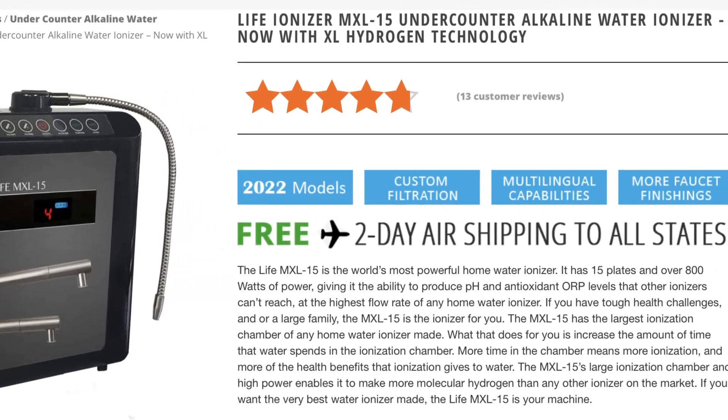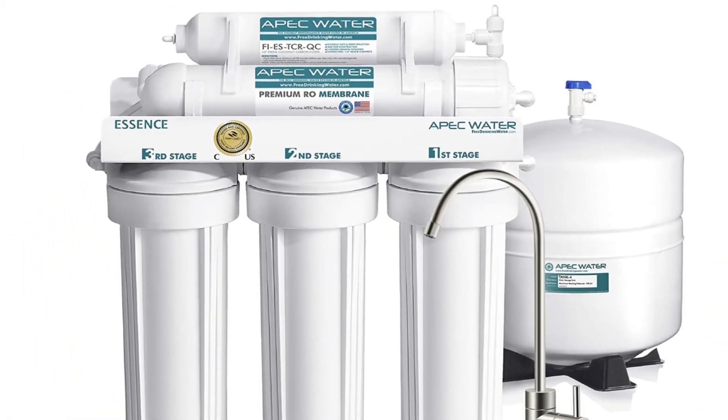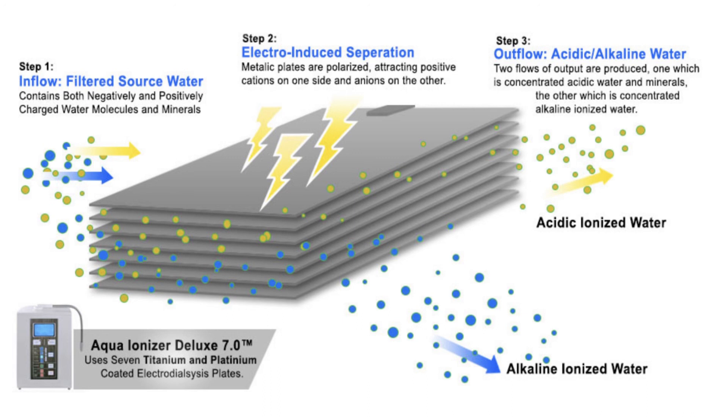The next step up from a simple RO filter would be to get a comprehensive water purification unit. These units will cleanse your water throughout multiple stages — first starting with a stage similar to an RO filter, then moving on to a UV light that shines on the water and sterilizes it. The most expensive models even have ionizer technologies where they use a process of electrodialysis to charge the water with only positive ions. The end result is high quality alkaline and ionized water, which is really good for human drinking and consumption, although it's not totally necessary for your plants.